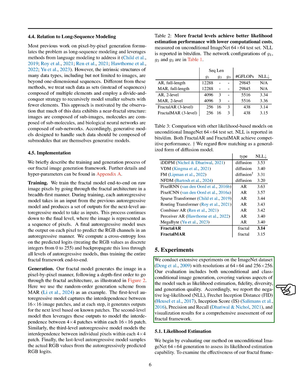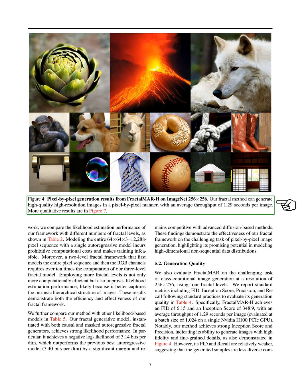We conduct extensive experiments on the ImageNet dataset at resolutions of 64-by-64 and 256-by-256. Our evaluation includes both unconditional and class-conditional image generation, assessing various aspects such as likelihood estimation, fidelity, diversity, and overall quality. We report metrics like negative log likelihood, Fréchet inception distance, inception score, precision, recall, and visualization results. Our method can generate high-quality, high-resolution images in a pixel-by-pixel manner, averaging 1.29 seconds per image.